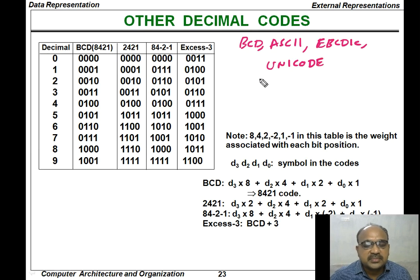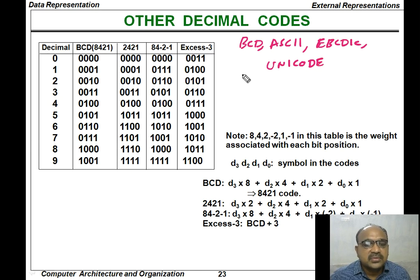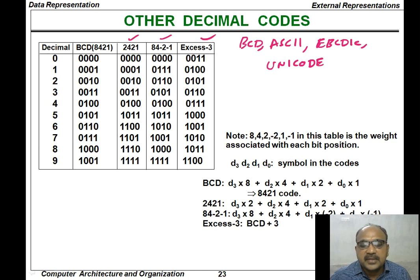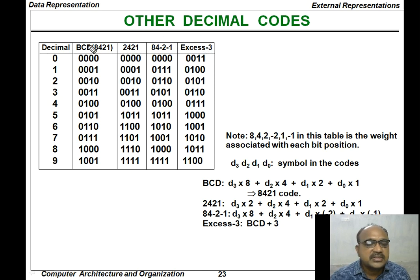In addition to these codes, sometimes the computer may need some additional codes also, such as the 2421 code, the 84-minus-2-minus-1 code, and the XS3 code. We already know what is meant by a BCD code. BCD code is called the 8421 code because the weights are 8, 4, 2, 1.